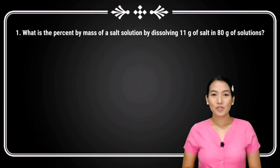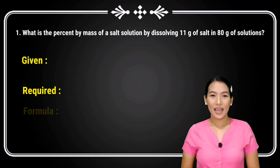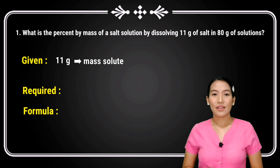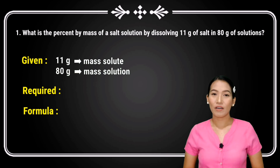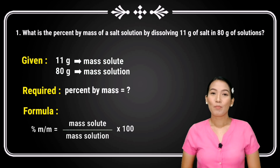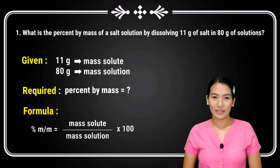Before we try to solve the problem, let us identify first what are given, what is being asked or required, and what formula we are going to use. Here, we have 11 grams as the mass solute and 80 grams as the mass of solution. What is asked is the percent by mass. Therefore, we will use the formula: percent by mass equals mass solute over mass solution times 100.